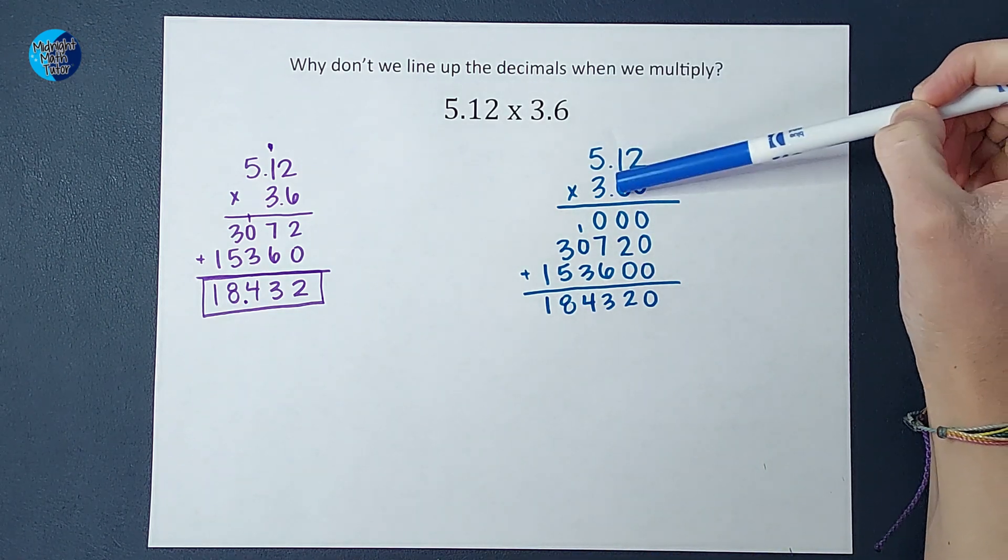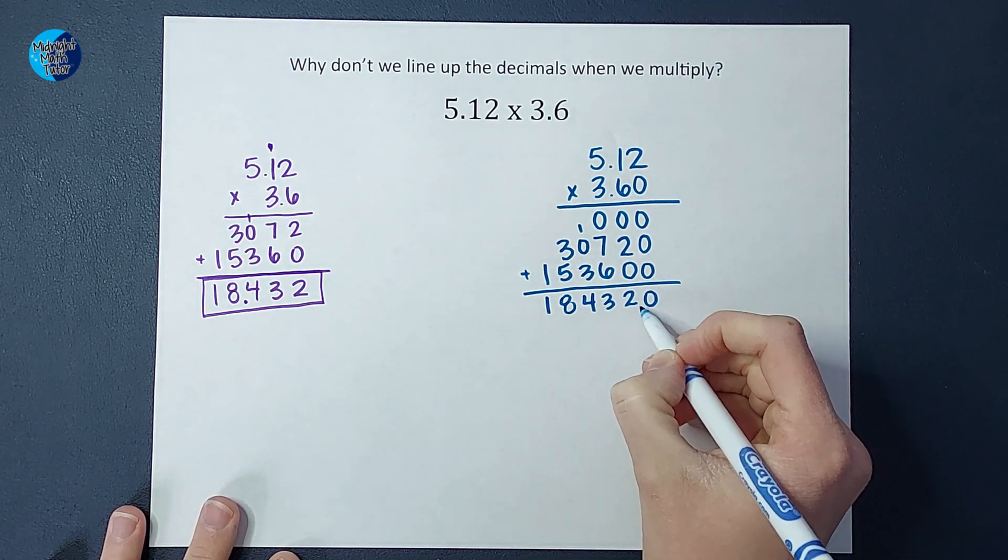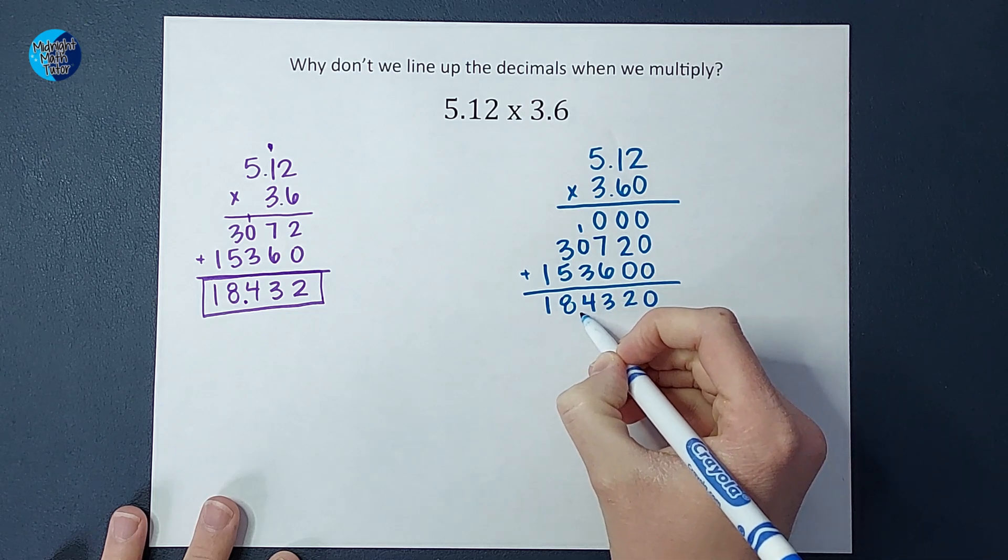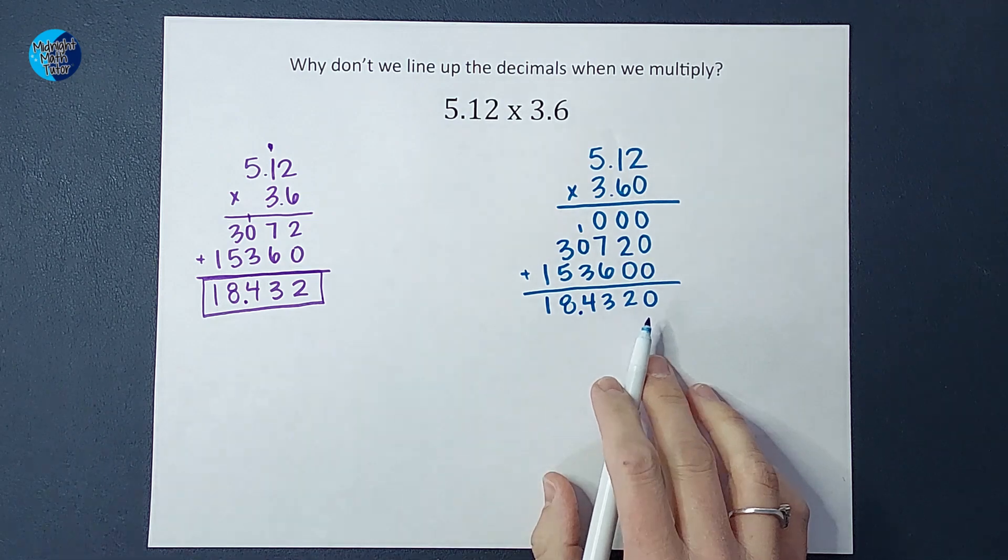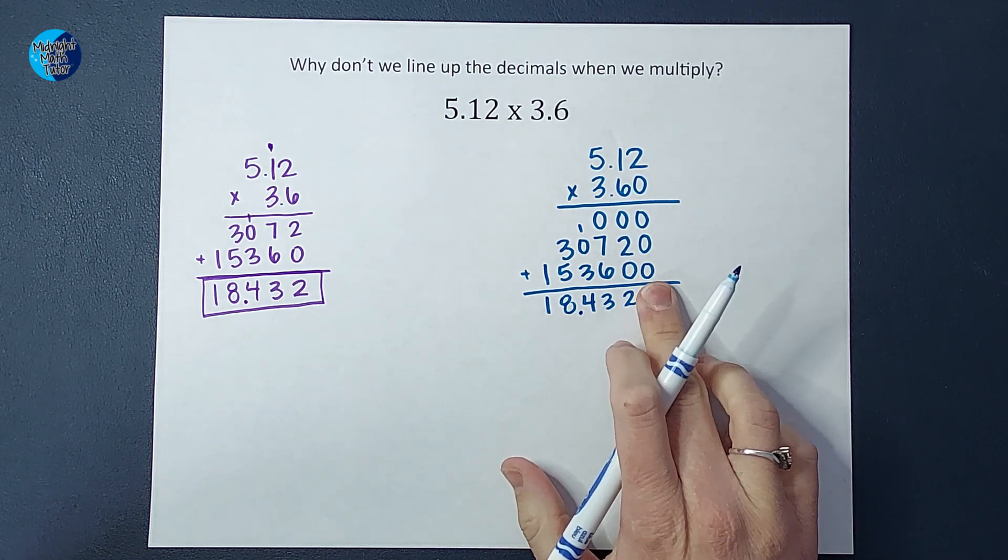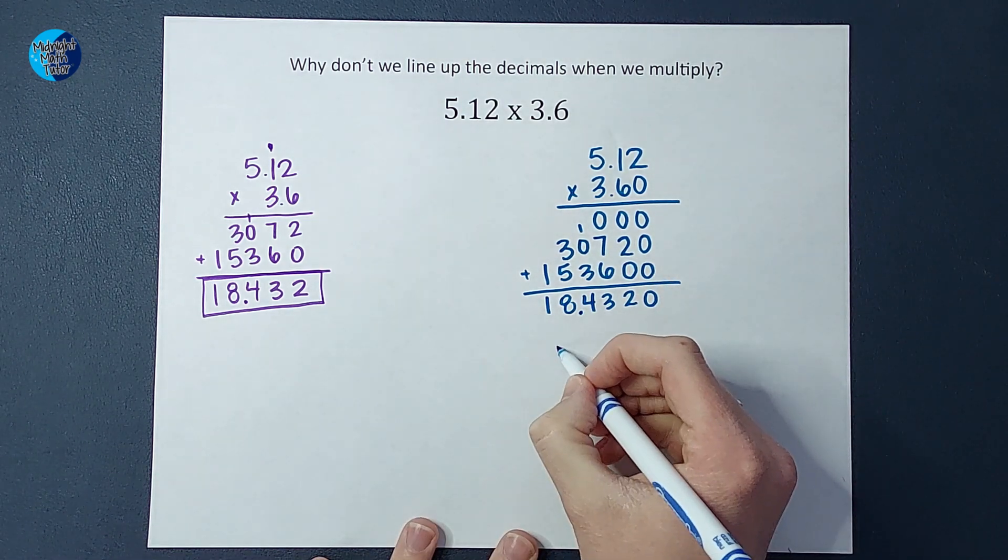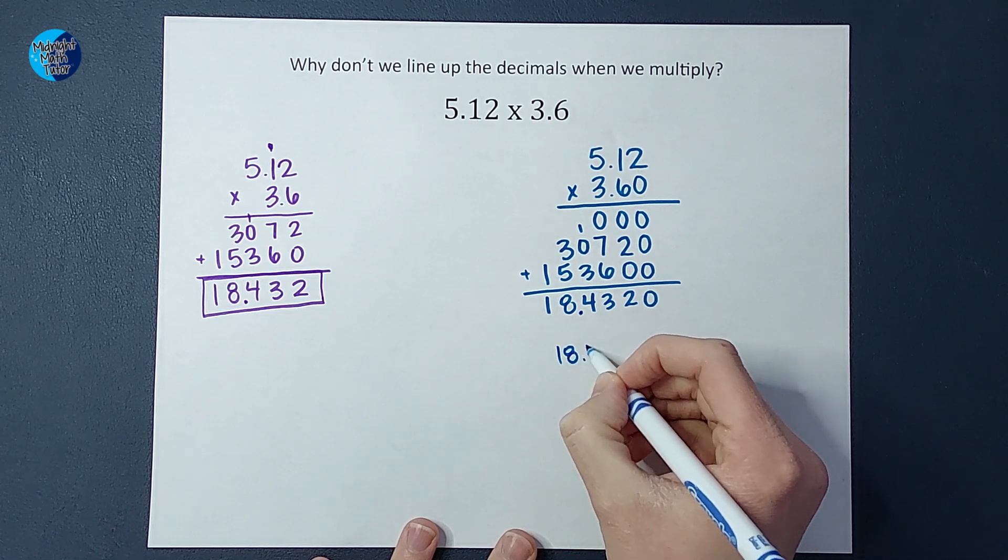I count one, two, three, four. I count over one, two, three, four. And look, guys, 18.4320. But I don't actually need that zero. I can drop it and just get 18.432.